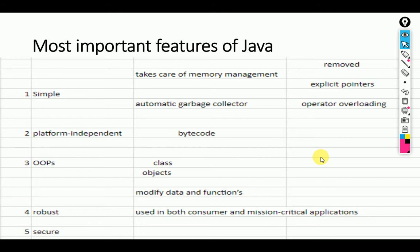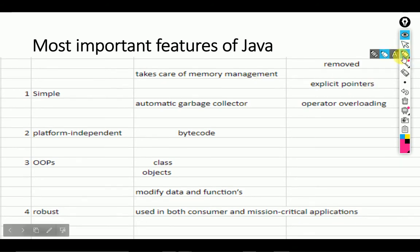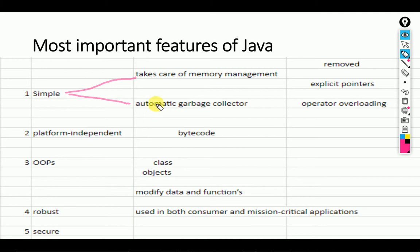Now, the most important features of Java. First: Java is very simple. Java is simple because Java takes care of memory management automatically. Java also has an automatic garbage collector — a class that provides the facility to clean unused objects and unused code automatically.